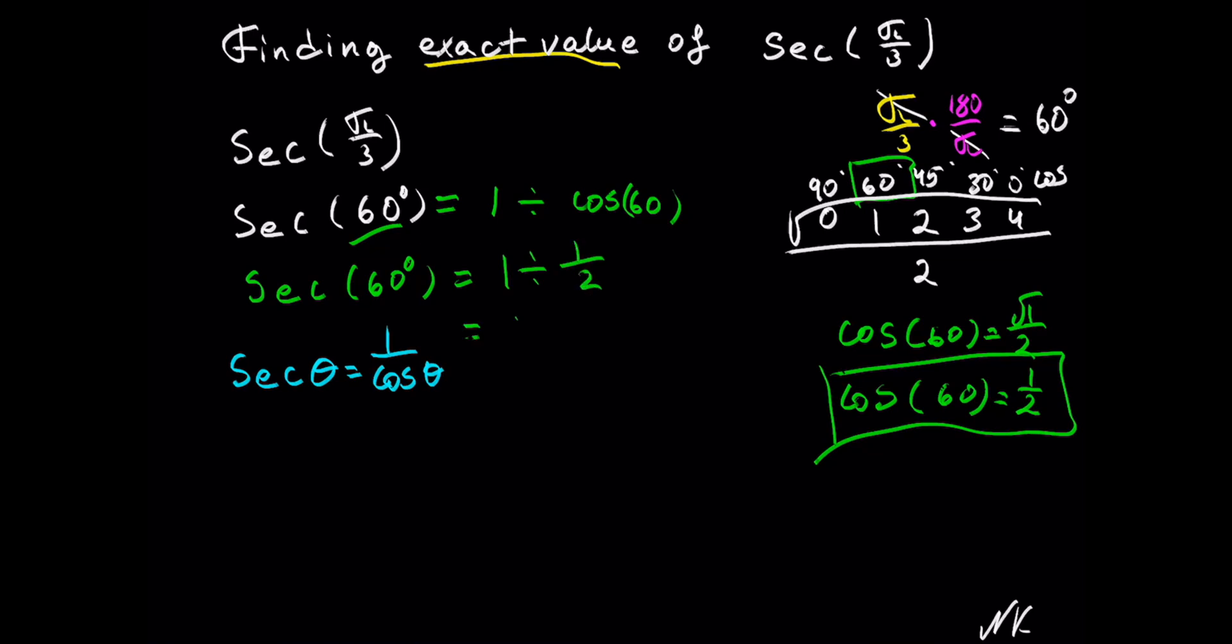This is equal to 1. We change the division into multiplication and flip the second fraction, 2 over 1. So we get that secant of 60 degrees is equal to 2.